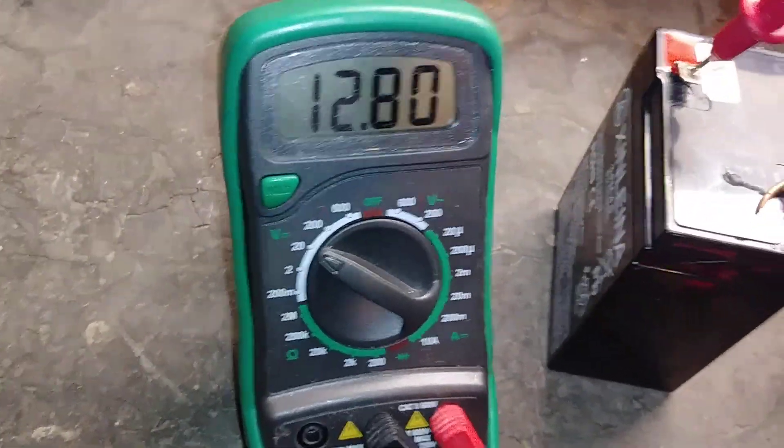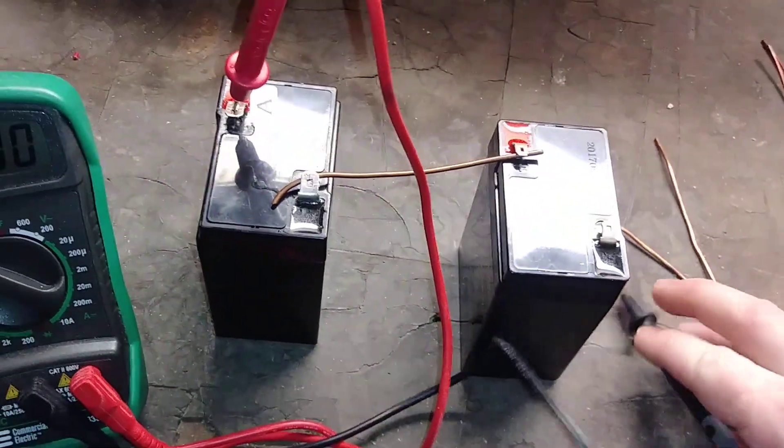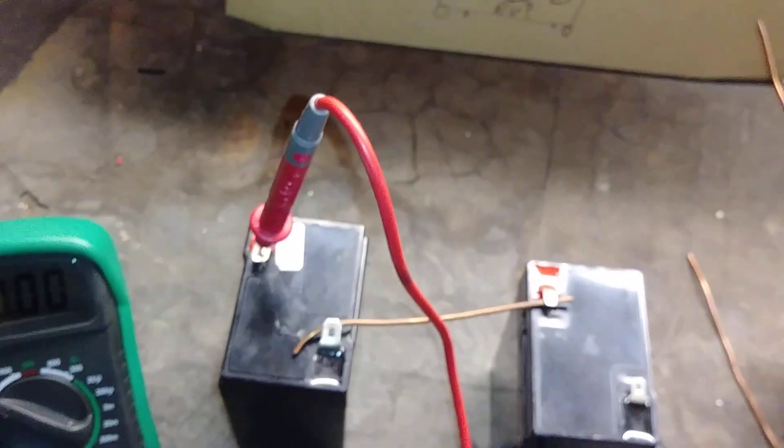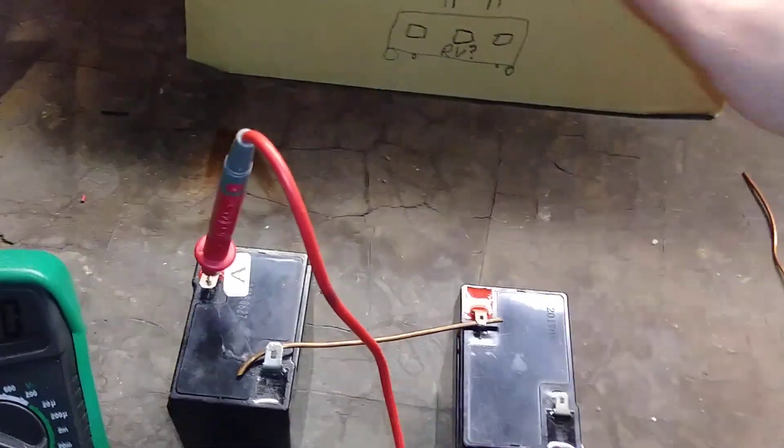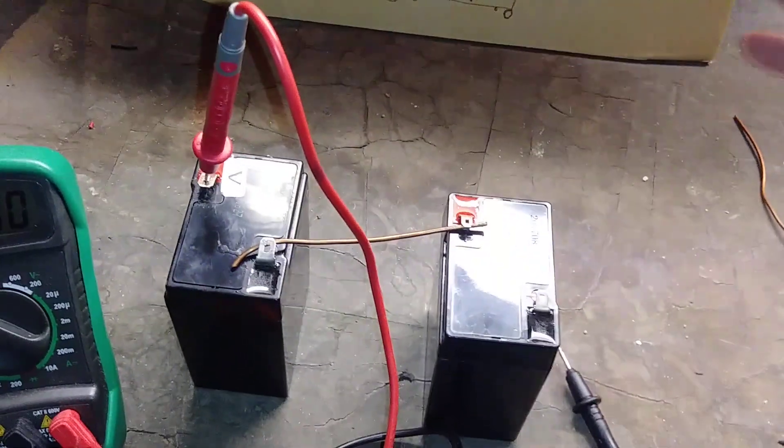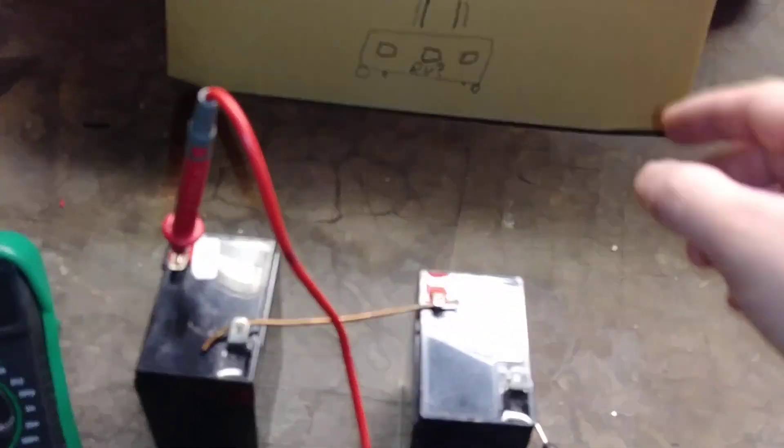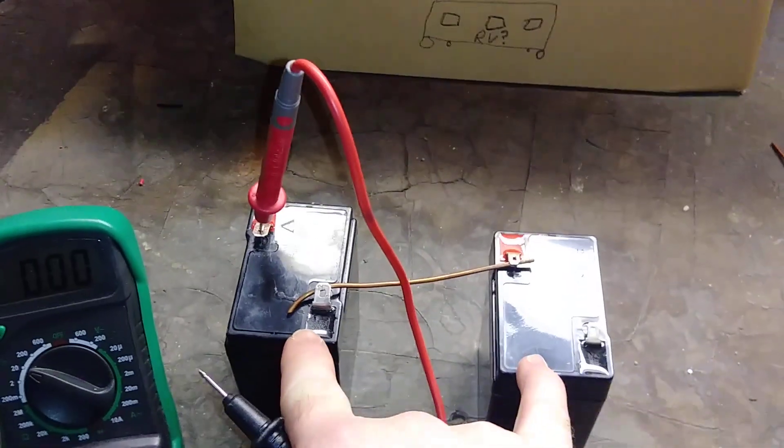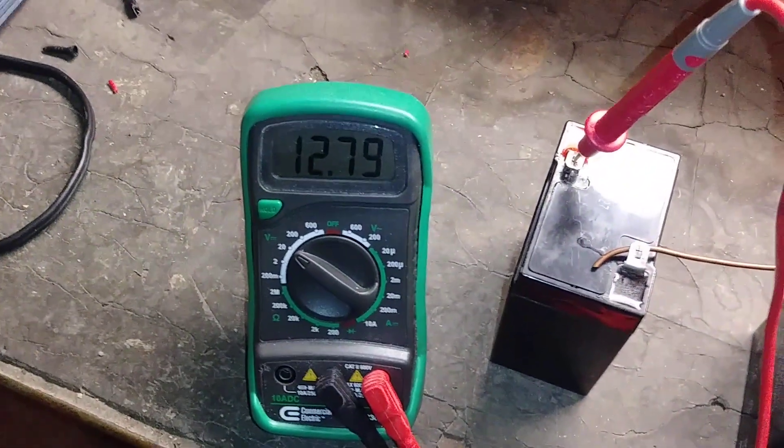This is called a series connection. From there it would be the same thing - you would connect the negative from one going to the negative on whatever it was, like an RV, and then the positive from the other one going to the positive on the RV if it was a 12-volt system. You obviously wouldn't want to do this and then put it on anything lower than the 12-volt system. But it's really awesome that something as simple as putting a positive on one battery to a negative on another doubles the voltage, as long as they're the same. You can do it on different batteries but having two six-volt batteries and turning them into one 12-volt battery is pretty cool.